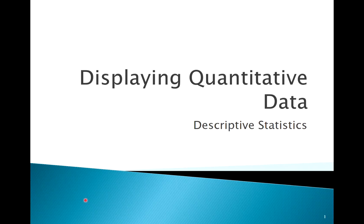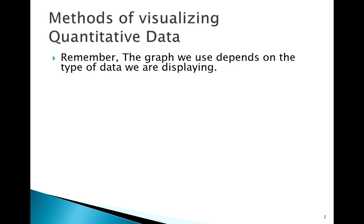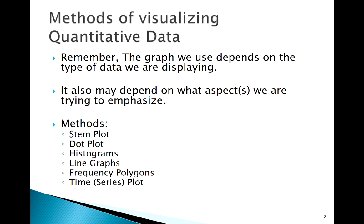Welcome back. Today we're going to be talking about different graphical descriptive methods for displaying quantitative data. We've seen before that certain methods only work for certain types of data. There are a handful of categorical methods, but there should be a lot more methods for quantitative data. Here's a list of all the different methods we're going to talk about: stem plots or stem-and-leaf plots, dot plots, histograms, line graphs, frequency polygons, and time series plots.